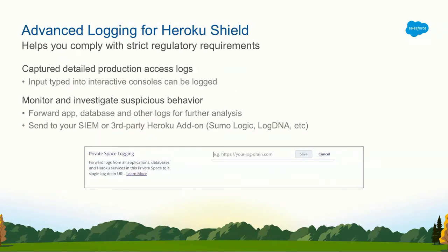We also provide advanced logging for Heroku Shield. In a Shield private space, every time a developer runs `heroku run bash` or something like that against an application in that space — that's an interactive dev console — everything they type is logged. So if somebody makes a mistake and you're trying to track down who did it and how they destroyed the production database, you have logs of everything that happened so you can piece it back together. All of these logs can go to a central destination by entering a log drain URL. Maybe that's your SIEM, or maybe you have a Splunk cluster and you'd like all of your application, routing, and database logs to go to one place where they're definitely stored — say if you need to store them for seven years — and you can alert on them as well.